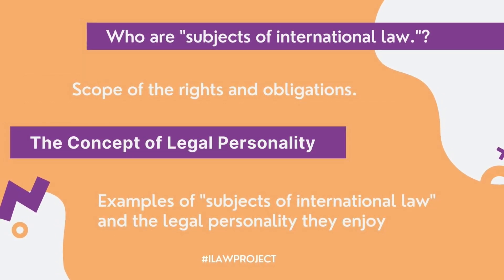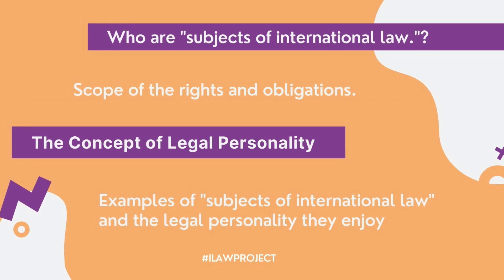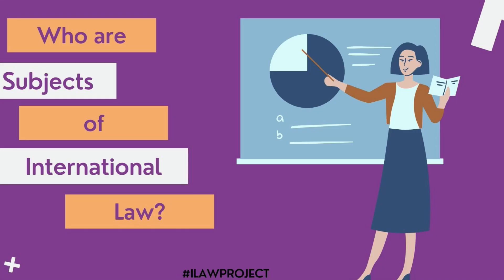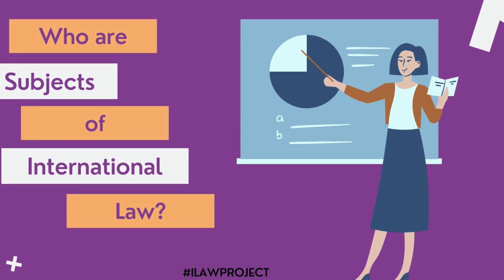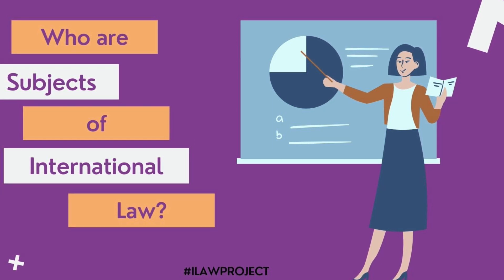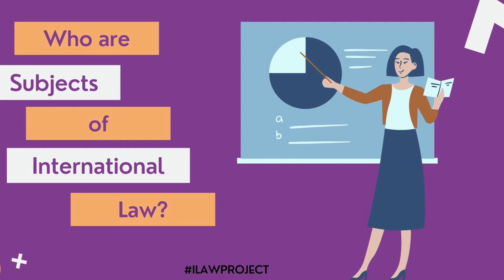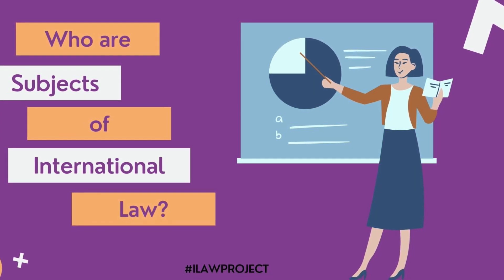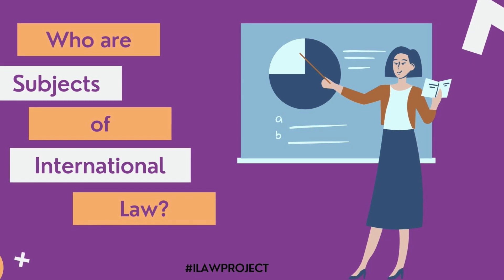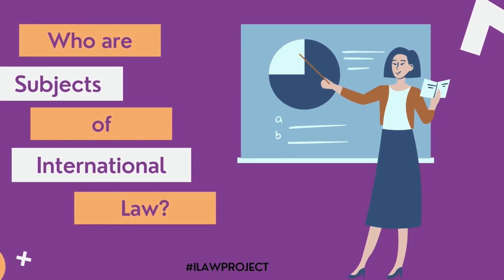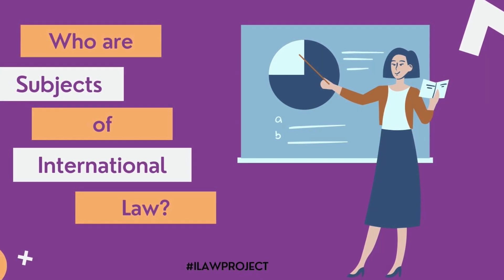To the first question: who or what are subjects of international law? The term subject connotes the bringing of an entity under the control of another person or thing, such that the entity is bound by certain norms and is obligated to perform a number of functions and desist from others. Subjects of international law are entities that are bound by certain norms, possess international rights and obligations, and the capacity to maintain such rights by bringing international claims where these rights have been breached.